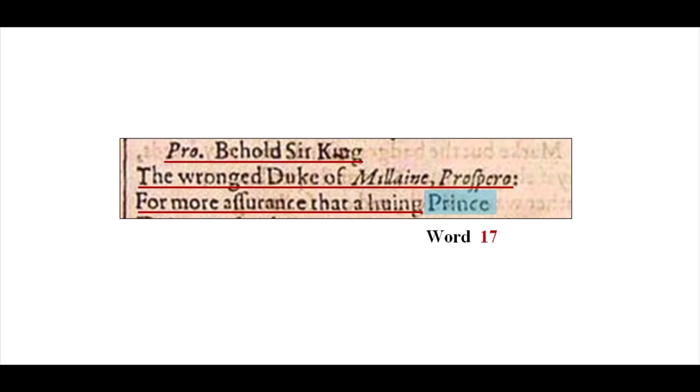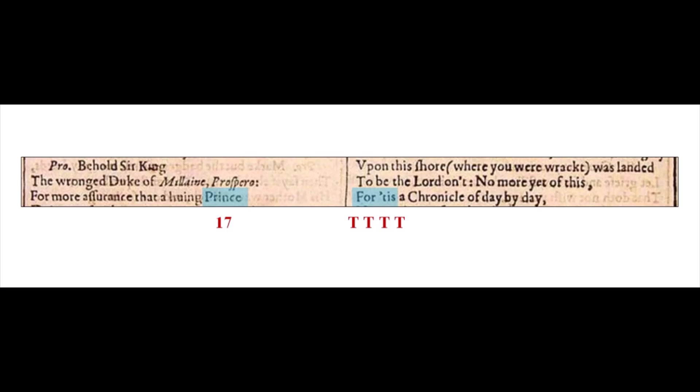Now we'll count the words. From the beginning of Prospero's line 'Behold, Sir King,' the 17th word is 'Prince.' And similar to how we found 'fourth T magic,' if you look directly across from Prince on the same line in column two, we get the words 'fortis' — F-O-R-T-I-S — which is another way of spelling 'four T's' written out as four letter T's. So beginning with Prospero and 'Behold, Sir King,' Prince is the 17th word and directly across from 'fortis,' which can be read as Prince 1740.